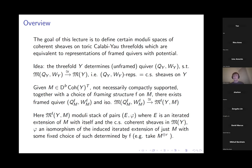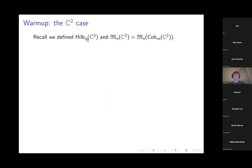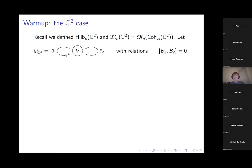Without further ado, let me recall. Last time we defined the Hilbert scheme and introduced another stack: the stack of compactly supported coherent sheaves on C² with a fixed dimension n of the space of sections. We saw that if we looked at the underlying quiver without the framing — with the relation that the two endomorphisms commute — the stack of representations of this unframed quiver was the same as the stack of compactly supported sheaves on C².